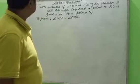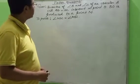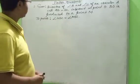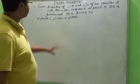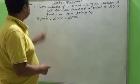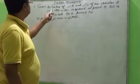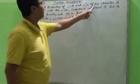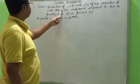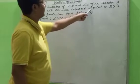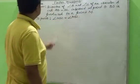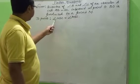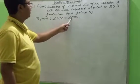Good morning children. In today's class, we are going to do some extra sums. We have copied chapter number 7. The first problem: the bisectors of angle B and angle C of an isosceles triangle with AB equals AC intersect at O. BO is extended to a point M. Prove that angle MOC equals angle ABC.